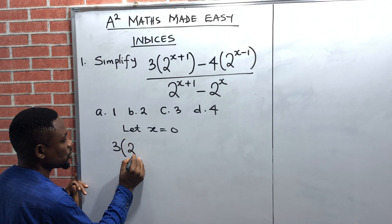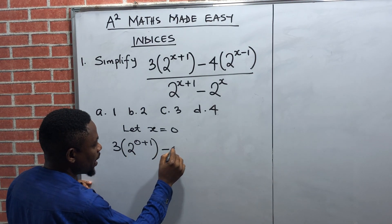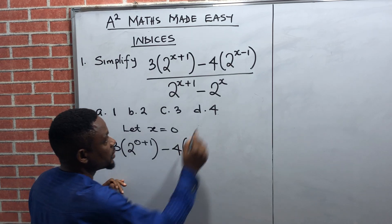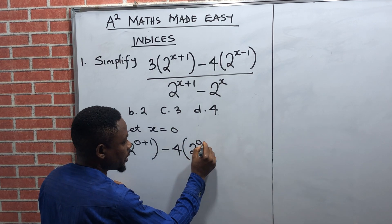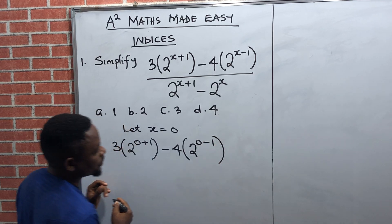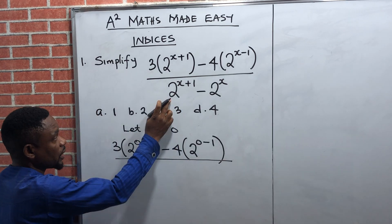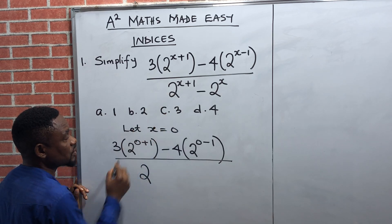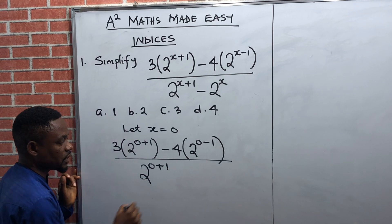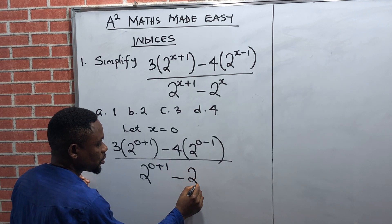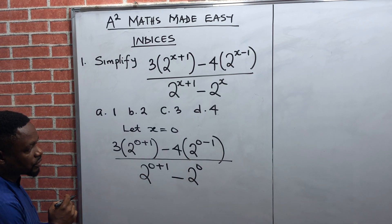So anywhere you see x, remove it and put zero. I have three brackets: this is two raised to power x — x is zero — plus one, close bracket. Then minus four, open bracket, two raised to power x — x is zero — then minus one, close bracket. That is the numerator. Then all over, moving to the denominator: two to the power x — remove x and put zero — plus one, then minus two to the power x — remove x and put zero.